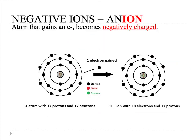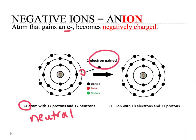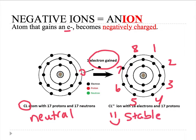Atoms can gain an electron. If you take a look at chlorine in a neutral stage, it is missing one electron to complete its shell. So it gains an electron from another atom. If you count the electrons — one, two, three, four, five, six, seven, and eight — that's a happy and stable chlorine atom. Since it gained an electron, it now has a negative charge.